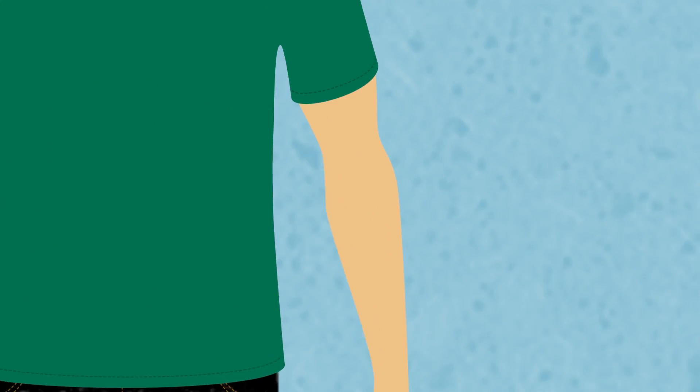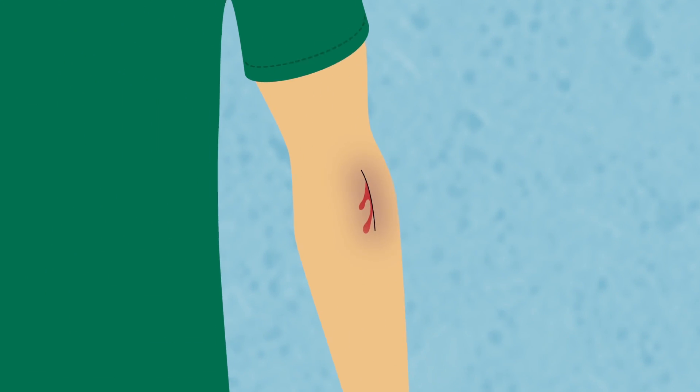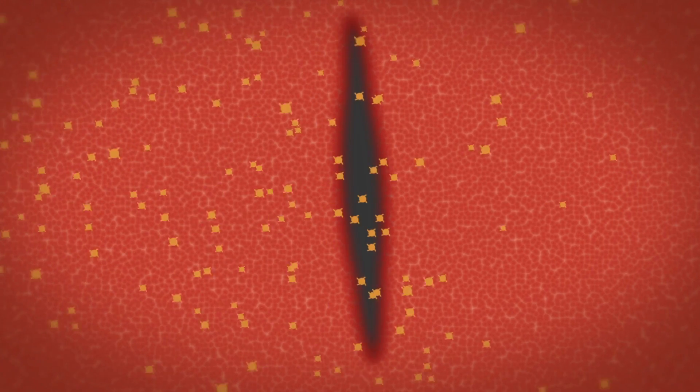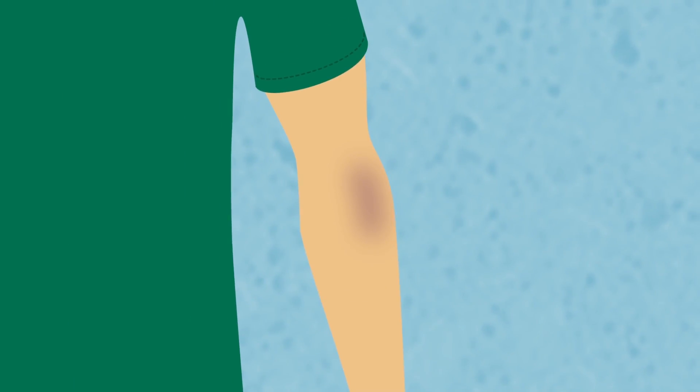Platelets help prevent bleeding and help blood to clot. When a wound is bleeding, platelets gather at the wound and form a clot to stop the bleeding. If you don't have enough platelets in your blood, you'll bruise more easily and might have bleeding gums, rashes, and nosebleeds.